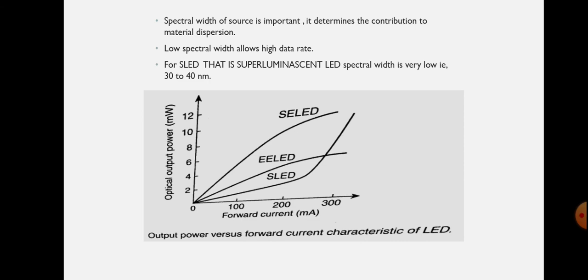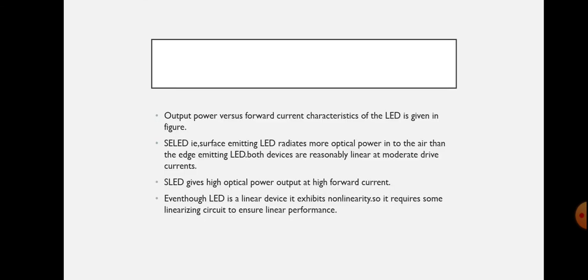The surface emitting LED gives higher output power, and as the forward current increases, the output power also increases. For the EE-LED, the output power also increases with forward current but is lower than that of the SE-LED. The superluminescent LED gives higher output power at higher current. The SE-LED radiates more optical power into the air than the edge emitting LED, and both devices are reasonably linear at moderate drive current. The S-LED gives high optical power at high forward current. Although LED is a linear device, it exhibits non-linearity, so it requires a linearizing circuit to ensure linear performance.